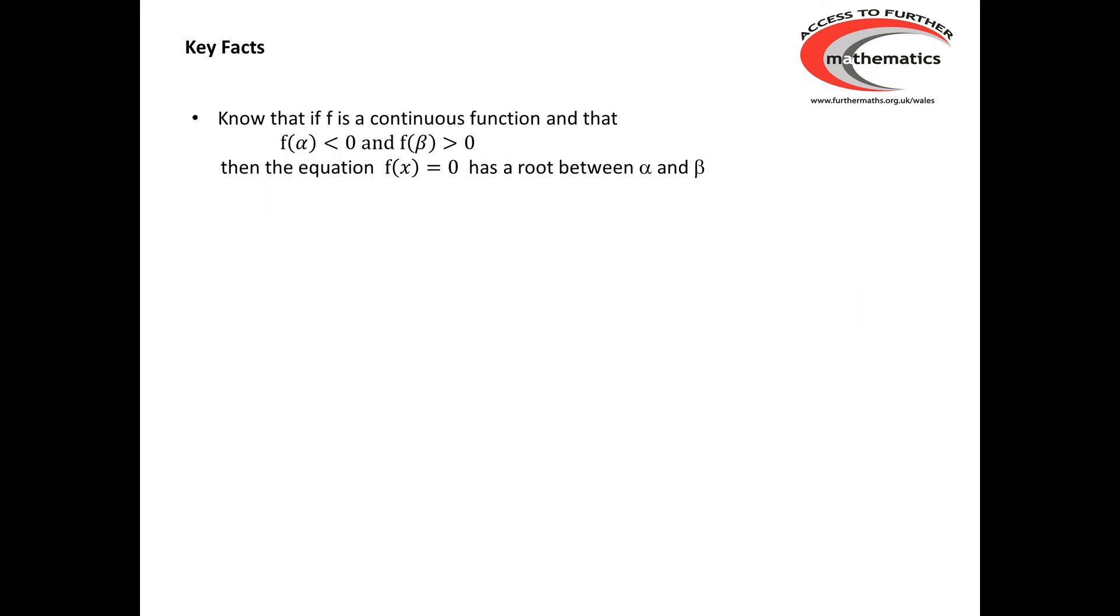So, our key facts. Well, first of all, if we have a continuous function and we know that f(α) < 0 and f(β) > 0, then that tells us that the equation f(x) = 0 has a root somewhere between alpha and beta. And that is sometimes called the intermediate value theorem.